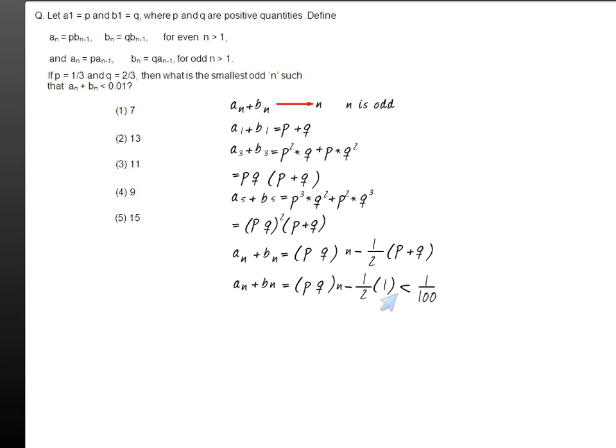So we can see that 1 by 3 into 2 by 3 to the power of n minus 1 by 2 is less than 1 by 100, or 2 by 9 to the power of n minus 1 by 2 is less than 1 by 100.